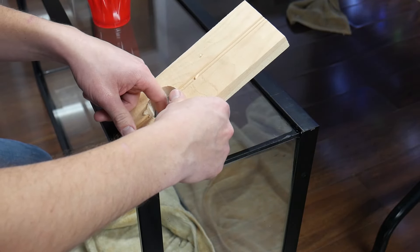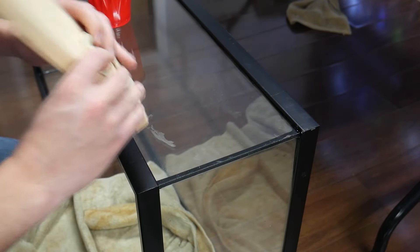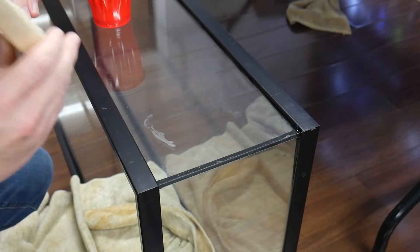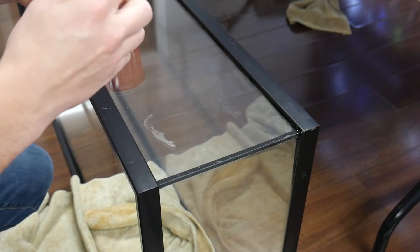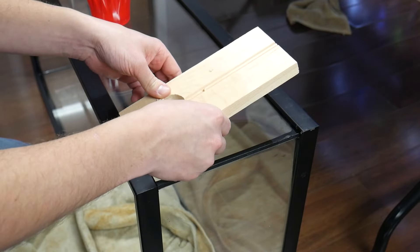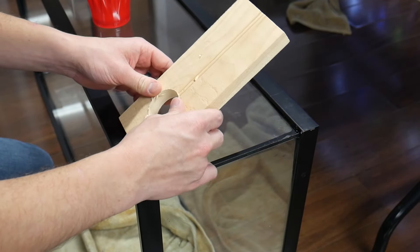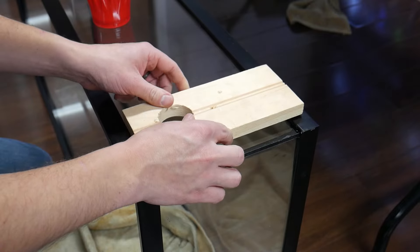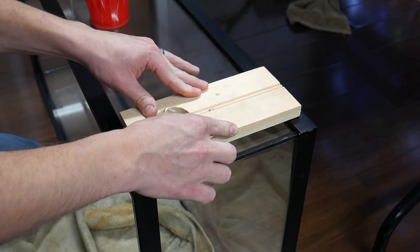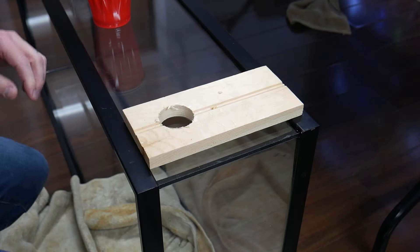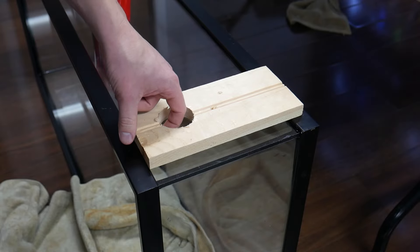I'm going to take the plumber putty and roll it out so that it's a skinny little snake, and then I'm going to make a ring around the hole on the wooden template. Then I'm going to flip that over so that that little plumber putty ring is going to be in between the wooden template and the glass, and that's going to create a little reservoir for the water.